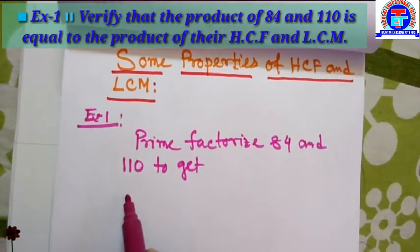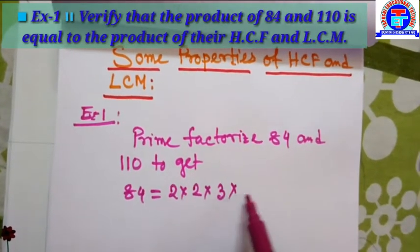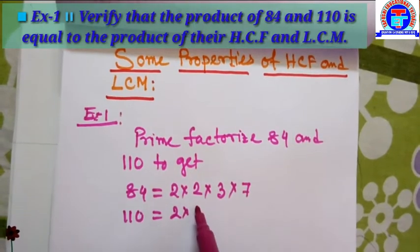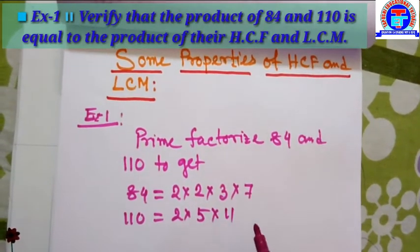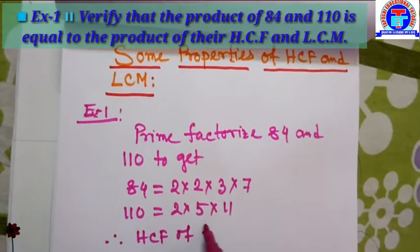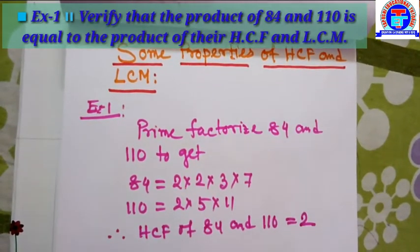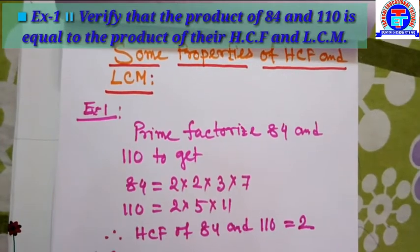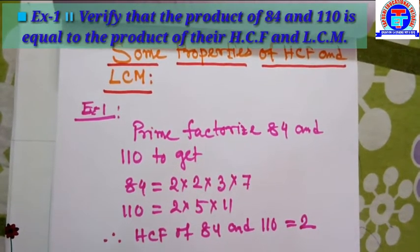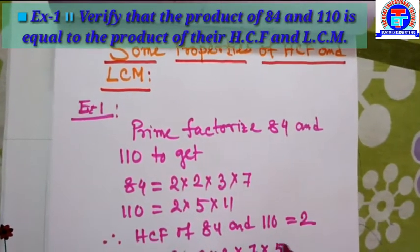84 is equal to 2 into 2 into 3 into 7. And 110 is equal to 2 into 5 into 11. Therefore, the HCF of 84 and 110 is equal to 2. And the LCM of 84 and 110 is equal to 2 into 2 into 3 into 7 into 5 into 11.